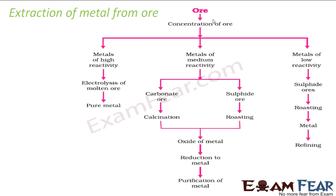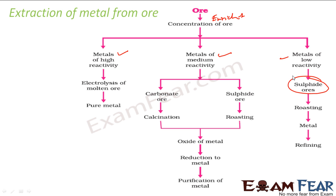So we have this ore and we did enrichment first. After enrichment, we have three options: high reactive, medium reactive, low reactive. In case it is low reactive and you get sulfide ores, then you roast that metal, you get the metal, and then you refine it. So in case it is low reactive, you get sulfide ores and then you do a roasting, and then you get the metals and then you further refine it.